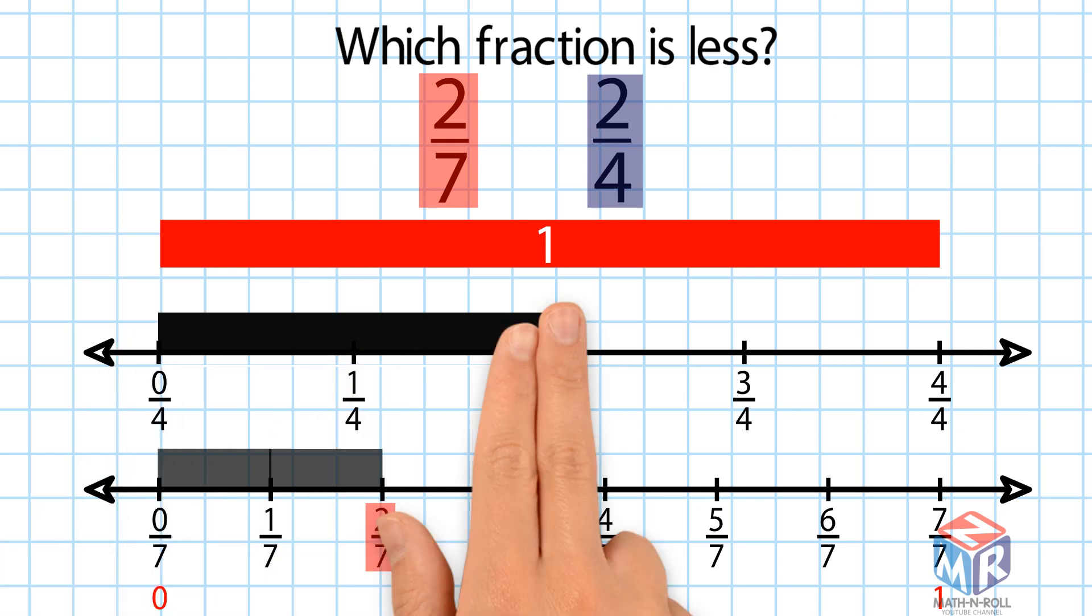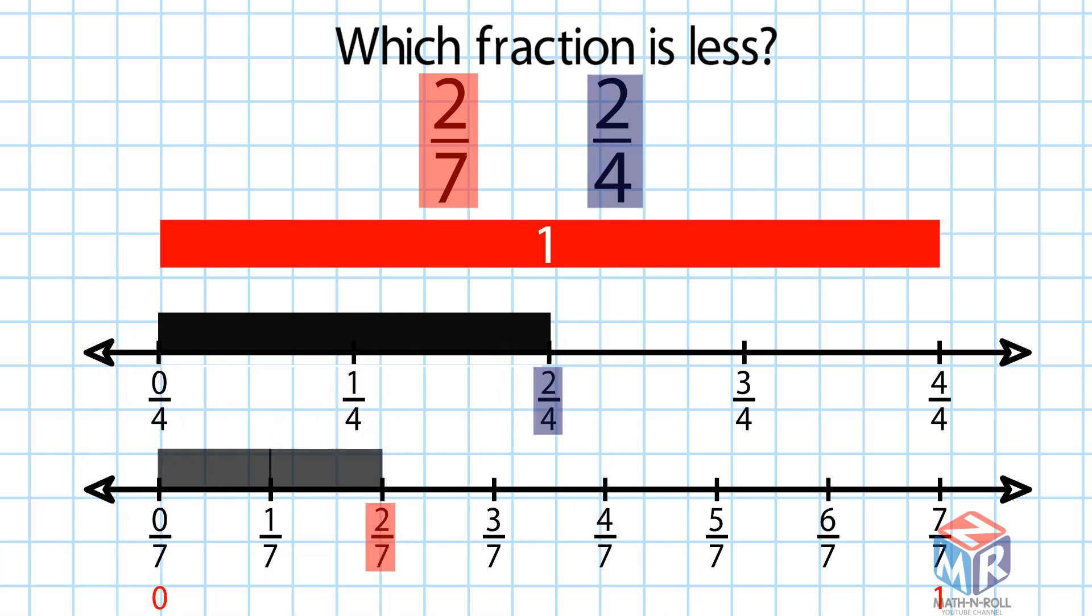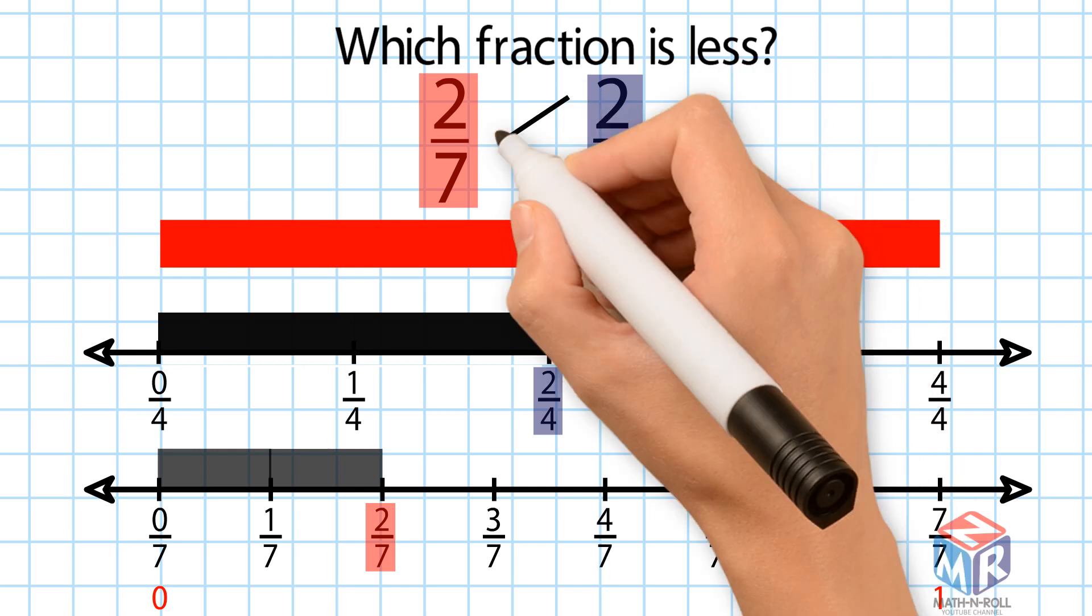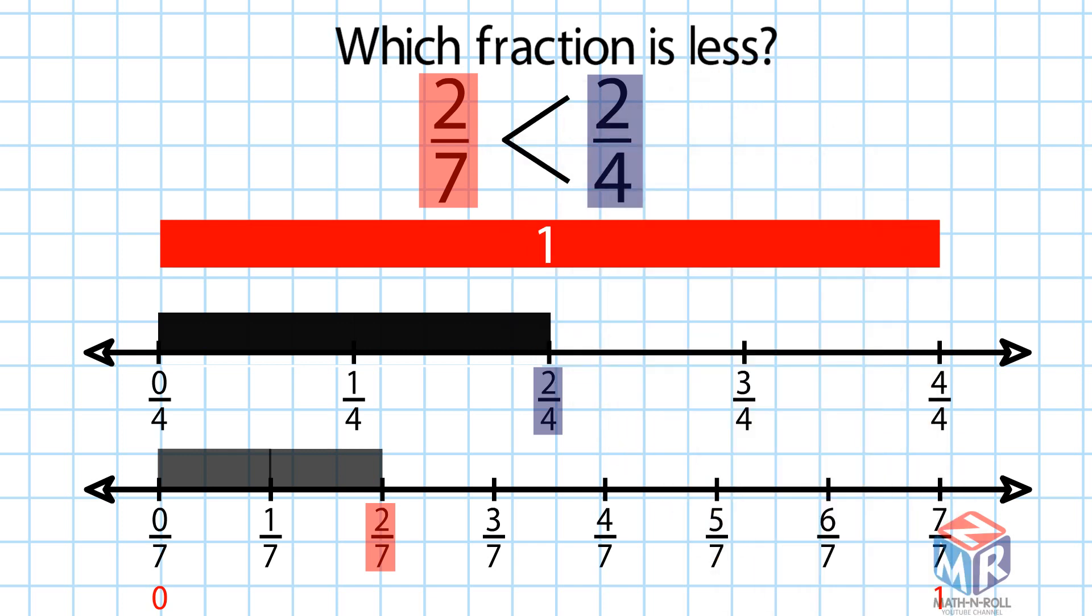This is 2 over 4. 2 over 4 is farther to the right on the number line. So, 2 over 7 is less than 2 over 4.